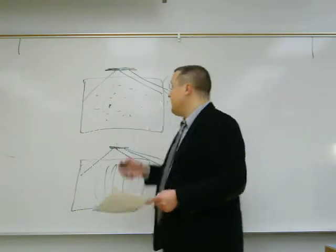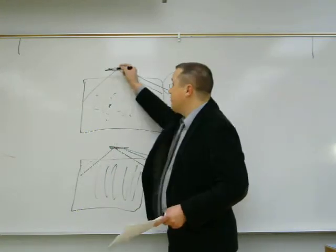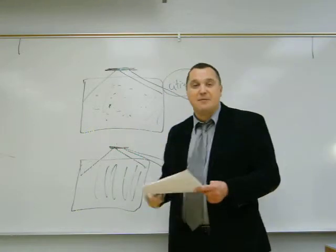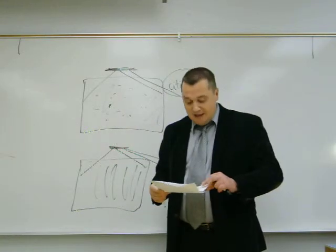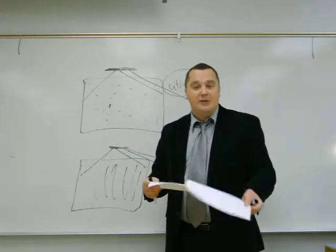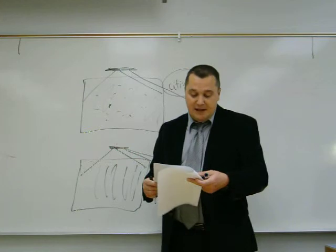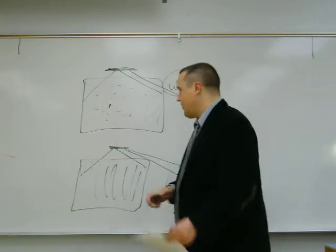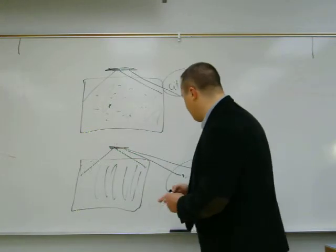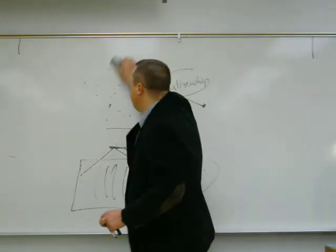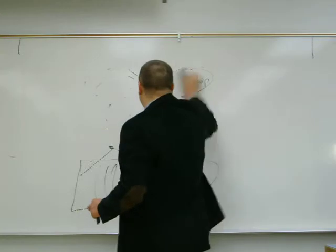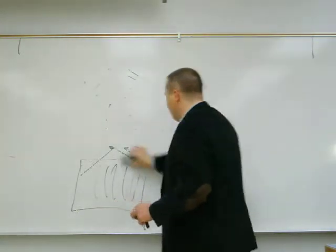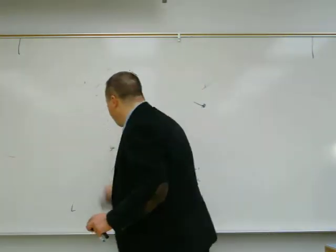Sovereignty means that this set of institutions is uniquely in power over a territory and a membership. You remember sovereignty from our previous discussion — how it was an invention forced through because of the wars of religion and so on. So what are these sets of institutions? There can be many types, one or many. Let's now talk about the second aspect I mentioned: the nation. What is a nation?